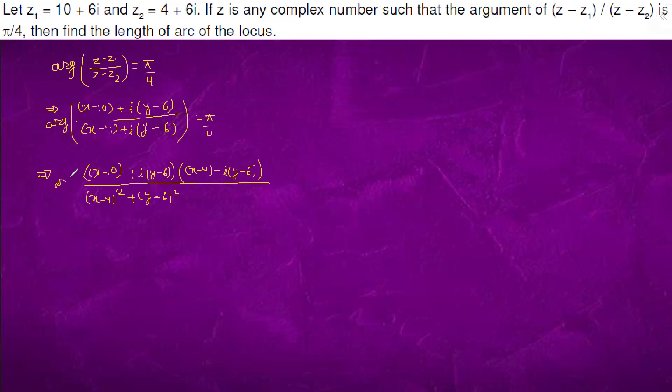The argument is π by 4. We consider this as the iota form. On simplification, this is on the denominator and we have the same thing in the numerator.